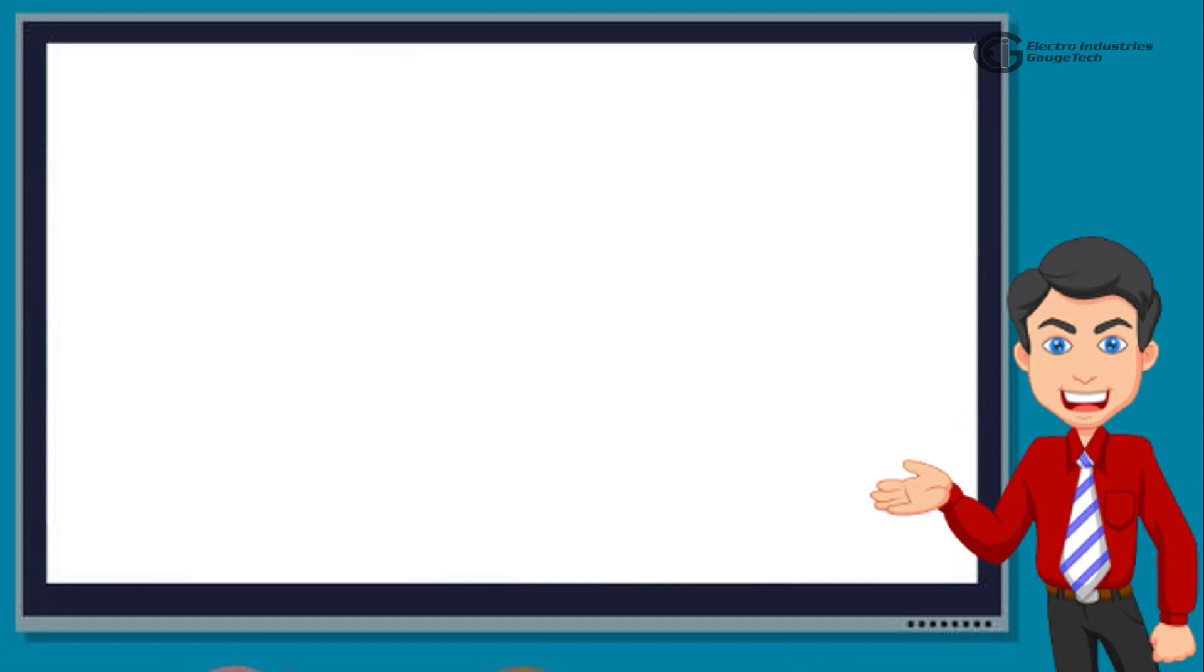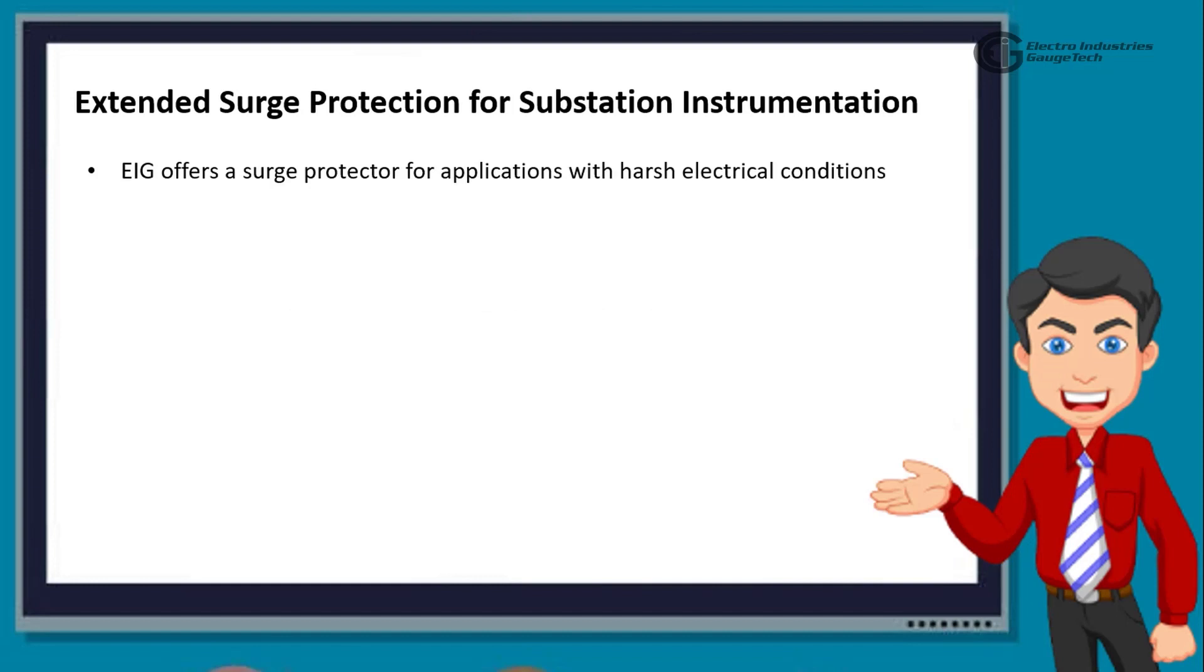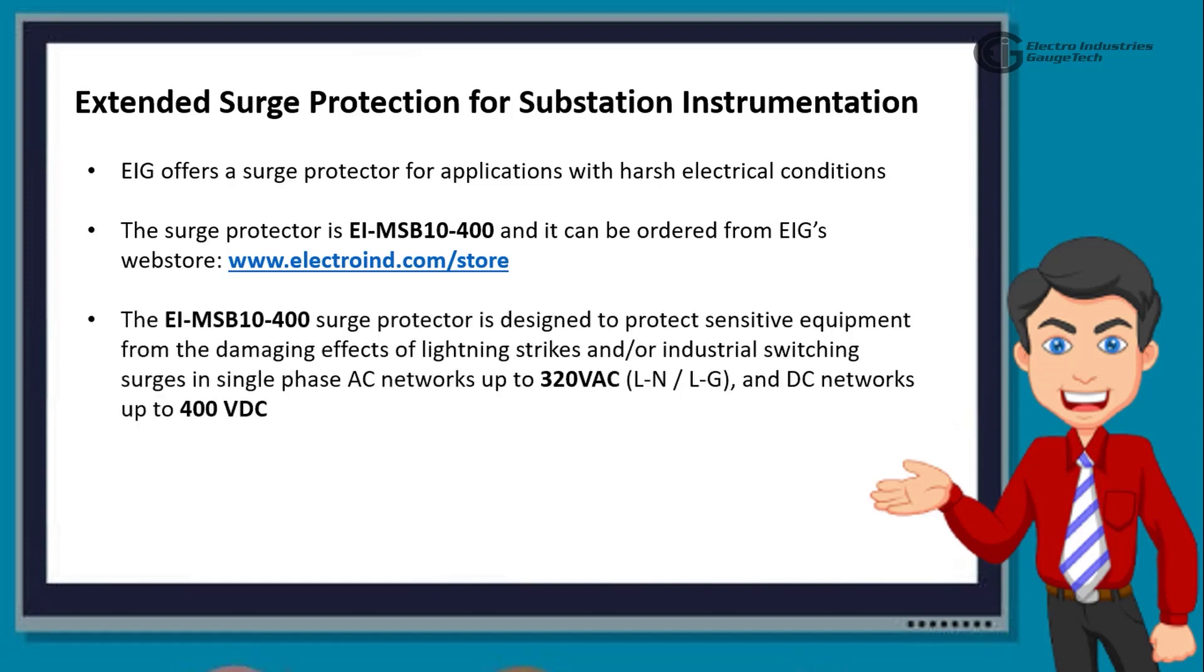Now, the last section to cover in this video is the extended surge protection for substation instrumentation. EIG offers a surge protector for applications with harsh electrical conditions. The surge protector is EIMS-B10400, and it can be ordered from EIG's web store. The EIMS-B10400 surge protector is designed to protect sensitive equipment from the damaging effects of lightning strikes, and/or industrial switching surges in single-phase AC networks up to 320 VACLN-LG, and DC networks up to 400 VDC. The protectors are ideal for metering systems, RTUs, PLCs, and protective relays.